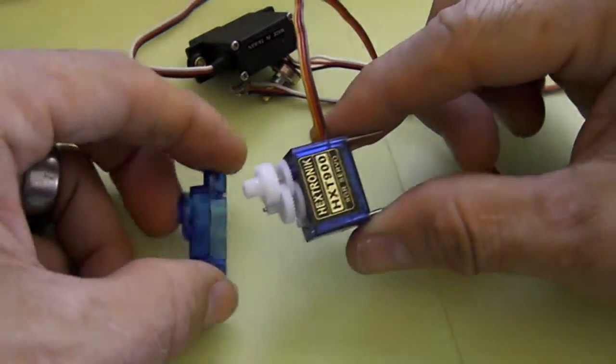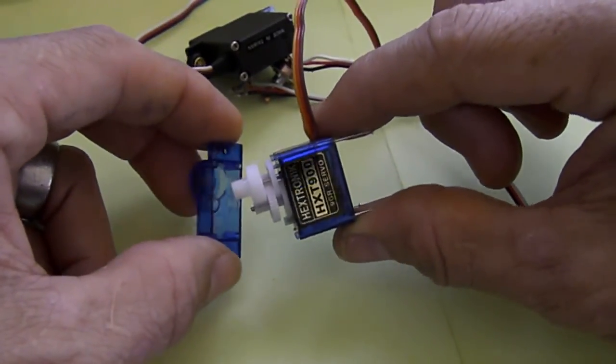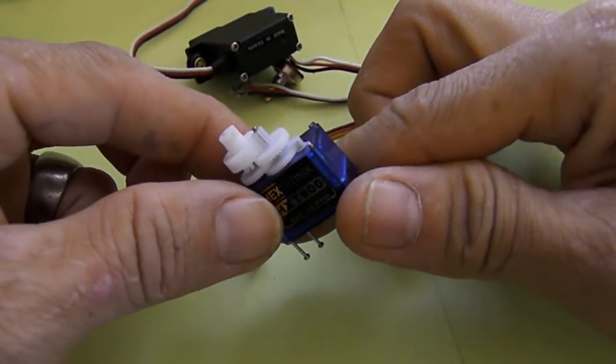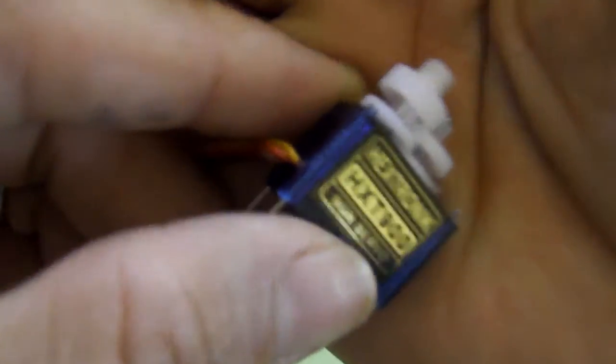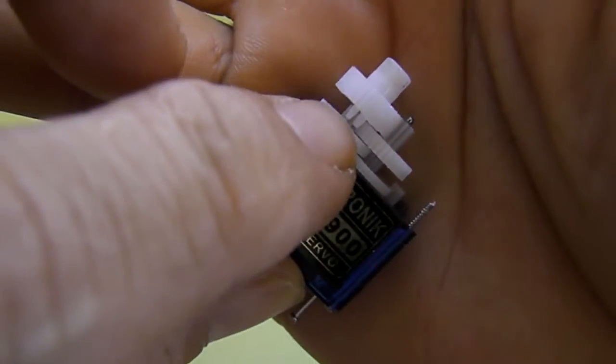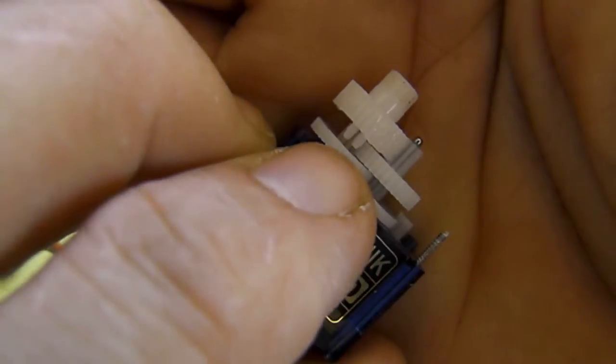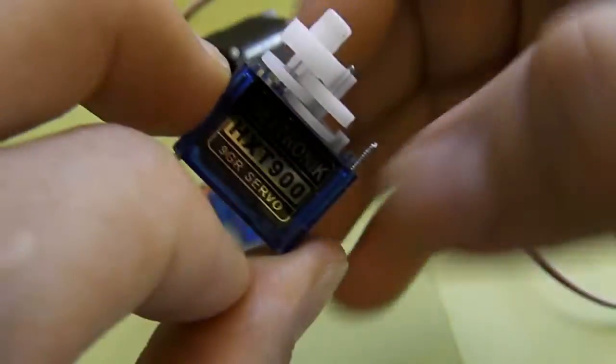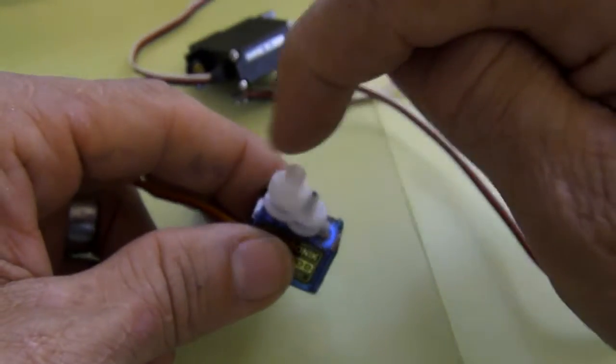So anyway, there are two important aspects that need to be taken care of. The first one: usually servos have a stopping point. In this case, if you look at it right here, you can see the place where the gear will crash against itself, and that needs to be cut out with an exacto knife. Once you cut that out, this guy will be capable of rotating fully in either direction.